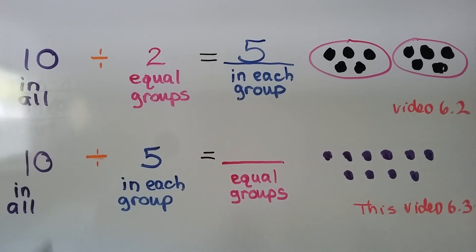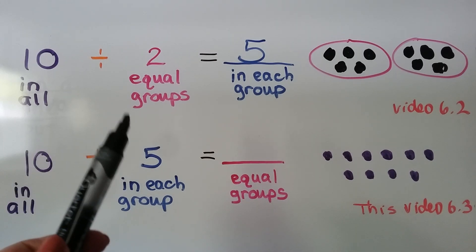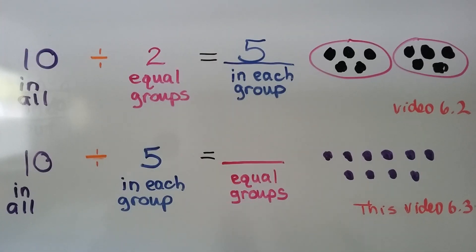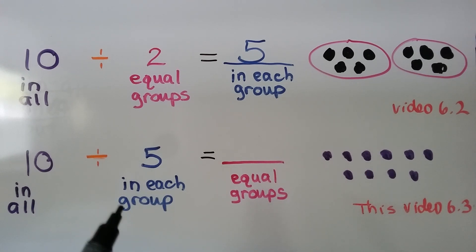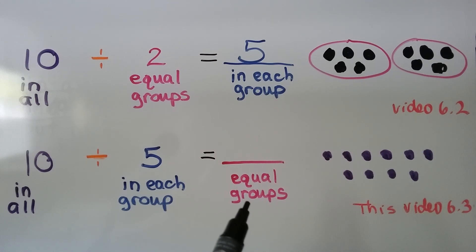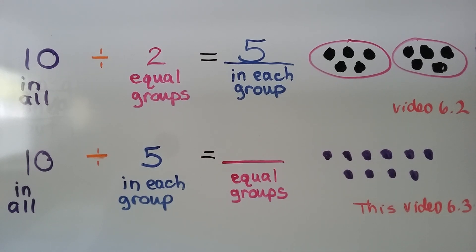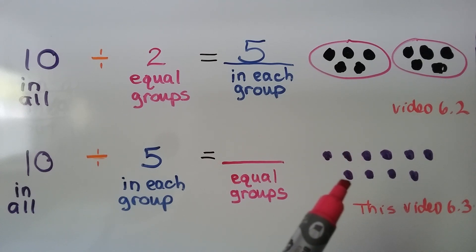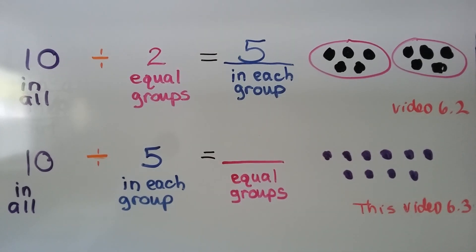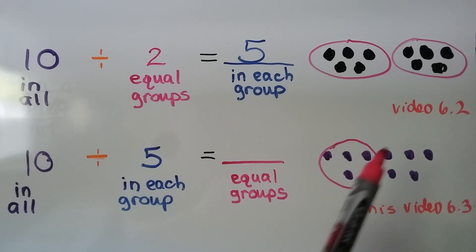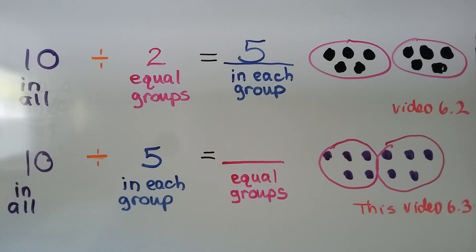We already knew how many there were in all, and we already knew how many equal groups we needed to make — we needed to find how many were in each group. In this video, we know how many there are in all and we know how many are in each group; we just don't know how many groups there will be. What we do is count five counters and put a circle around them to make one group, then circle another five to make a second group. Now we know we have two equal groups.